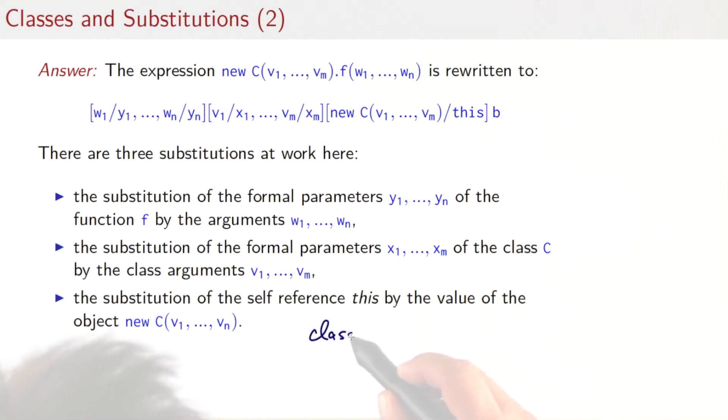As a reminder, we would have the class C with the x parameters, and then it has a function f with the y parameters and a body b. If you have an expression like this one here, then it is rewritten not using one substitution, as for plain functions, but three substitutions. The first substitution is the one we have seen before. We would have to replace the formal parameters of the function f with the actual argument values w1 to wn. The next substitution affects the class—we have formal parameters of the class which also have to be replaced by the actual argument values when we create the class.